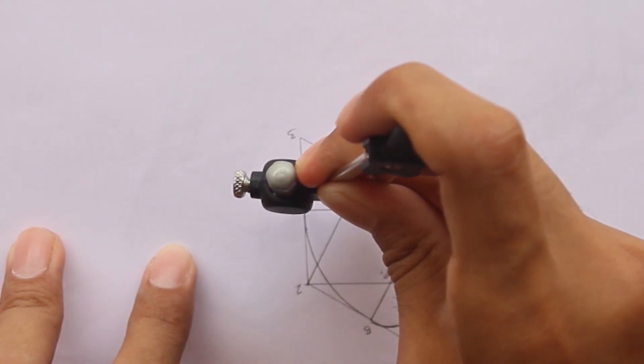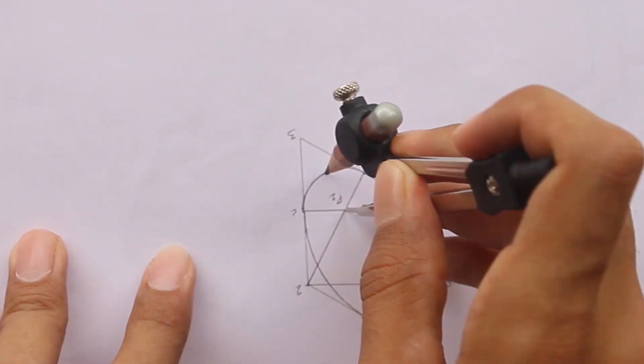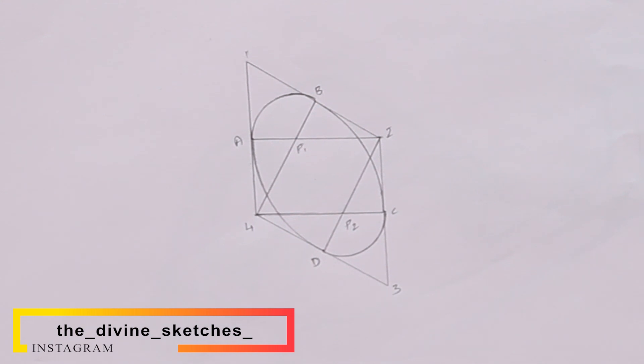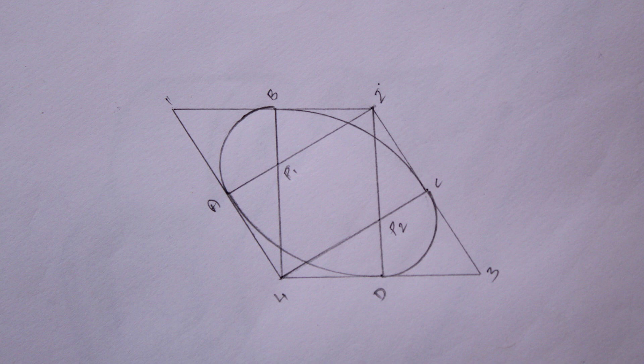place the compass at point P2. Take a distance of P2 to C or D and join it from C to D. So here you can observe, you have drawn a perfect ellipse or circle in a 3D view using the rhombus method.